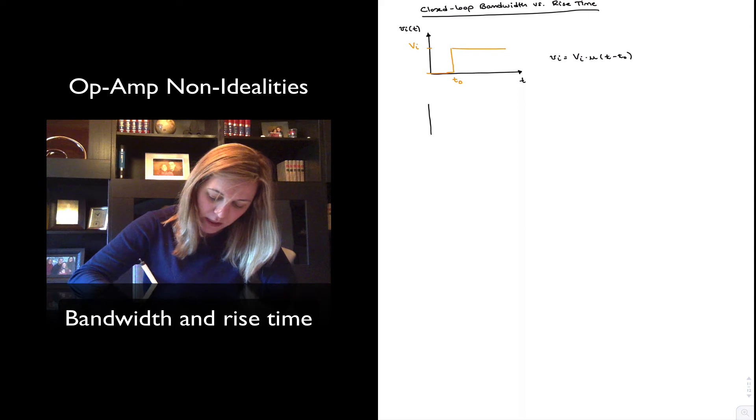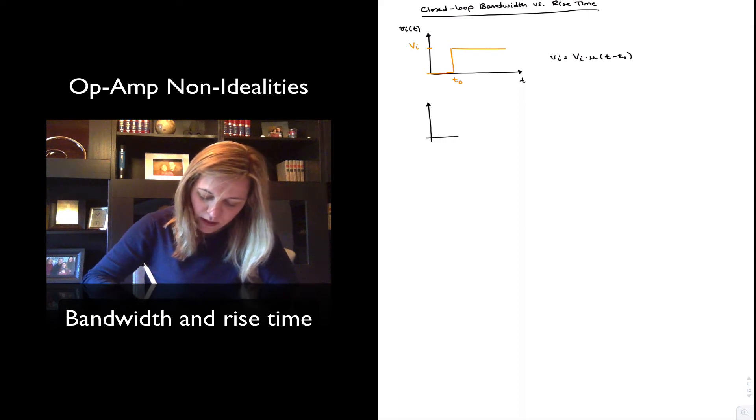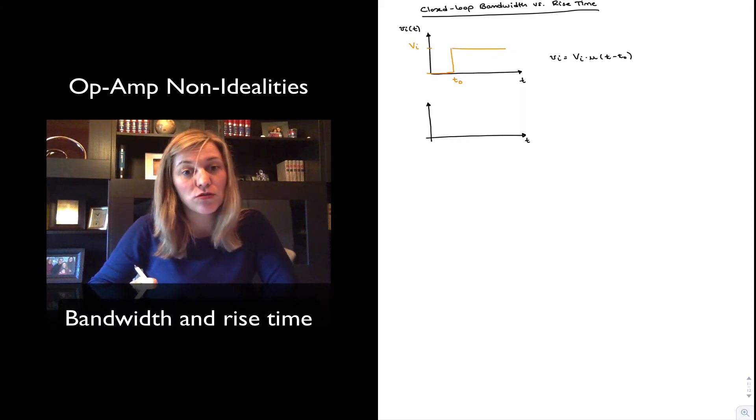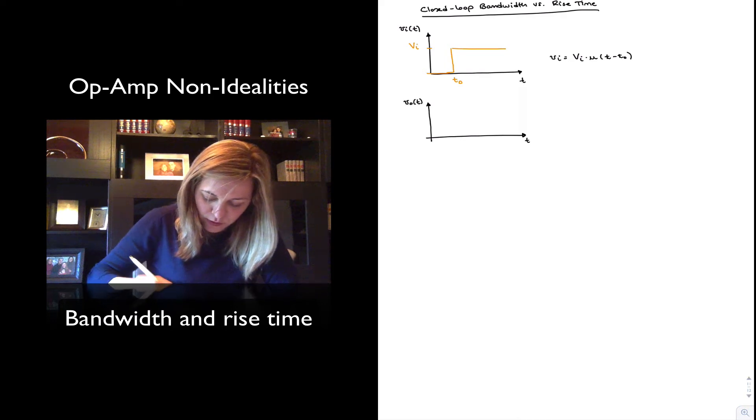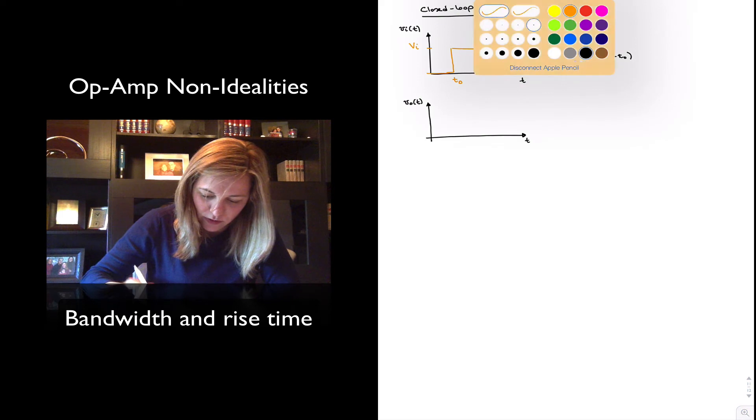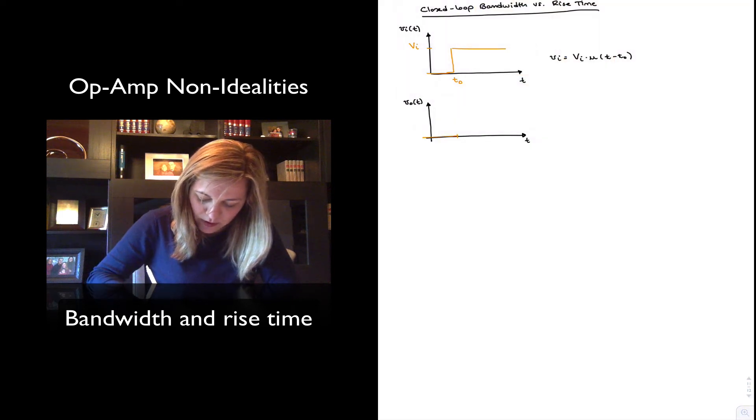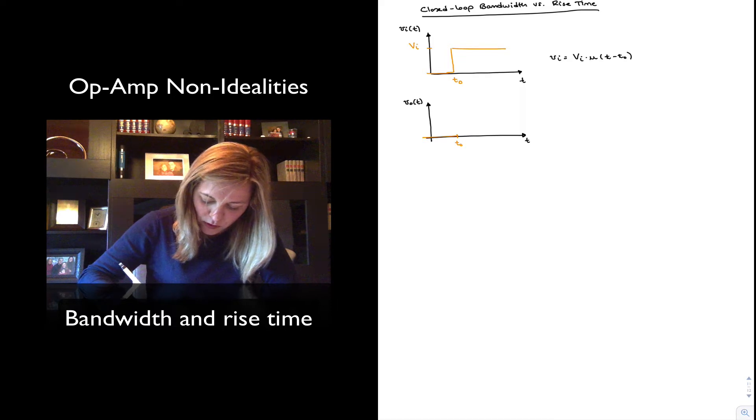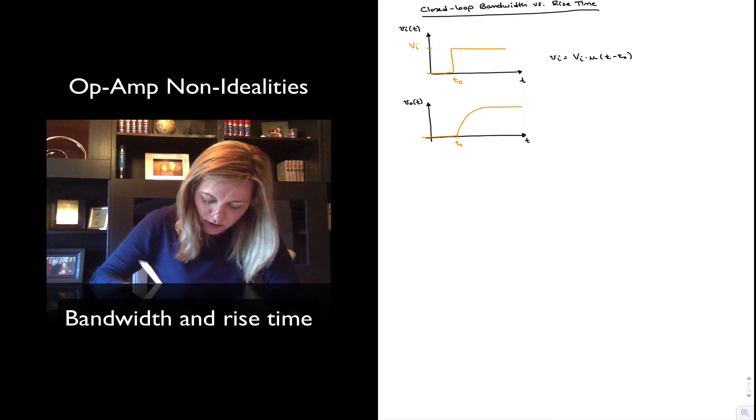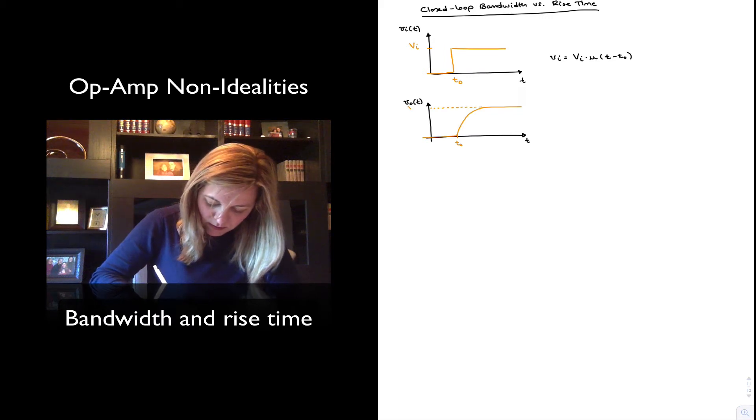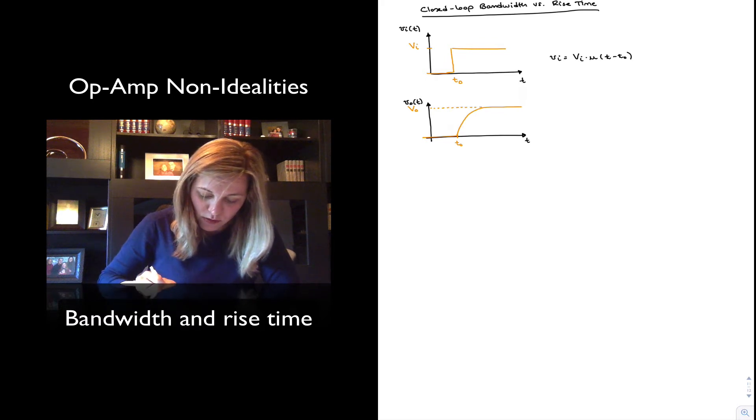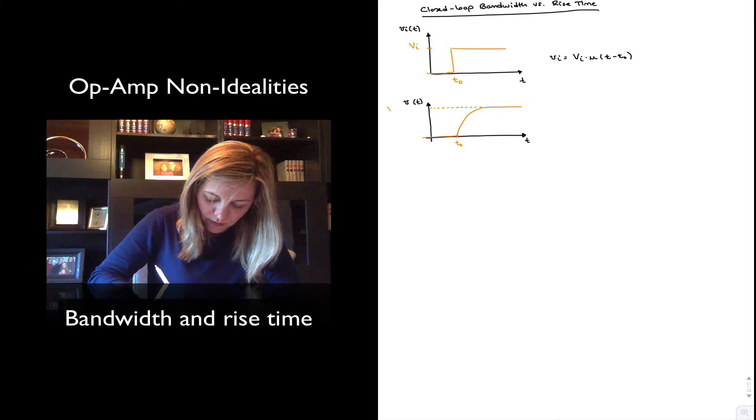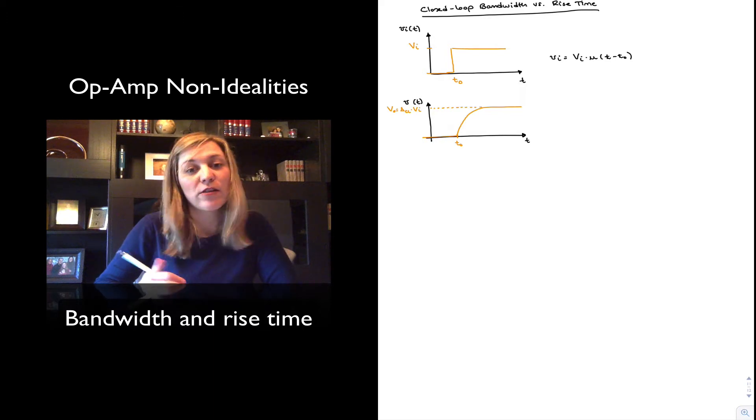Then the output that I expect to get, if I'm running into exclusively bandwidth limitations, no slew limitations, is a response of the following shape. So if I have an output signal for a time t zero, my output signal will go from zero to its final value, which I can represent as capital V out for final value. And that final value is going to be equal to the closed loop gain times the final value of the input Vi.